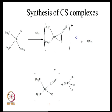For the synthesis of CS complexes, one can start with a rhodium complex bearing triphenylphosphine — a rhodium(I) species with one uninegative ligand and three phosphine molecules. When this molecule is reacted with carbon disulphide, it forms a carbon disulphide-coordinated rhodium intermediate in which the chloride has been ejected from the coordination sphere along with one PPh₃.